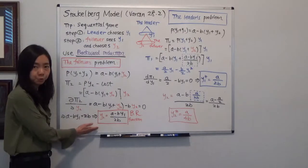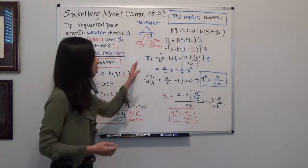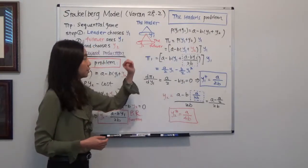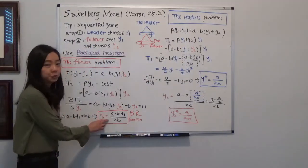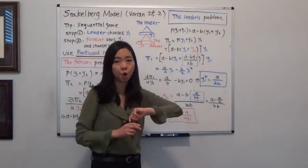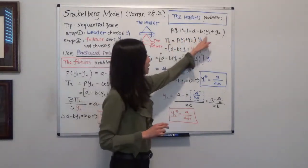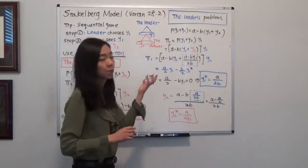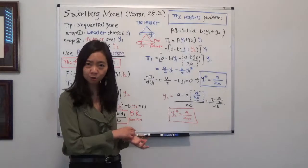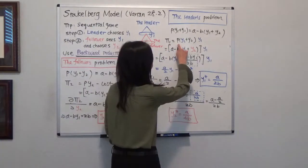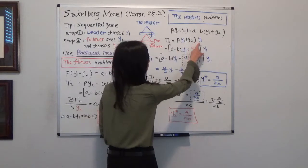So we solve firm two's problem. Now we're going to go back to solve the leader's problem. The leader knows that firm two is going to do this. So when the leader is trying to solve his problem, this is the price function, the same as before, and profit is equal to revenue because we assume that cost is equal to zero. So that's our profit. That's equal to the price times quantity.